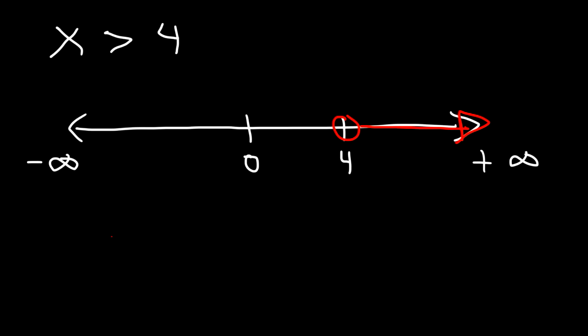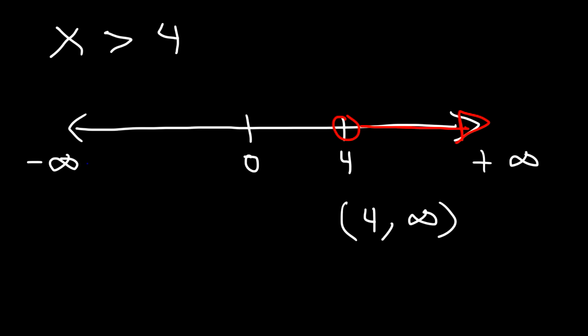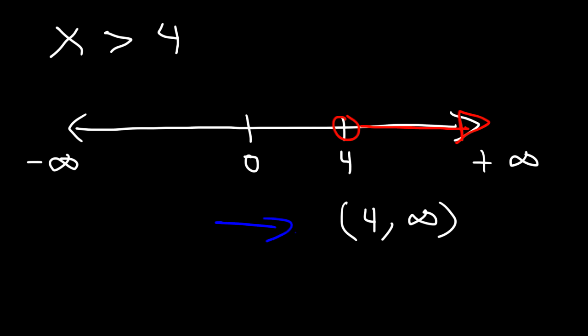To represent this solution using interval notation, it's going to be 4 to infinity. But because 4 is not included, we need to use parentheses — so (4, ∞). This tells us that x is greater than 4, but not equal to 4. And that's how you can represent this particular solution using interval notation.